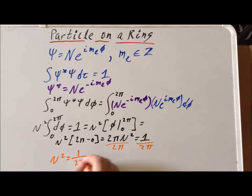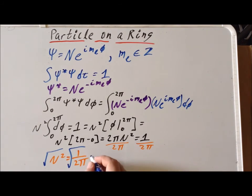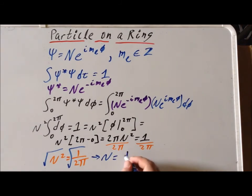Our last step to solve is simply to take the square root of each side. And this gives us that our normalization constant n is equal to 1 over the square root of 2 pi.